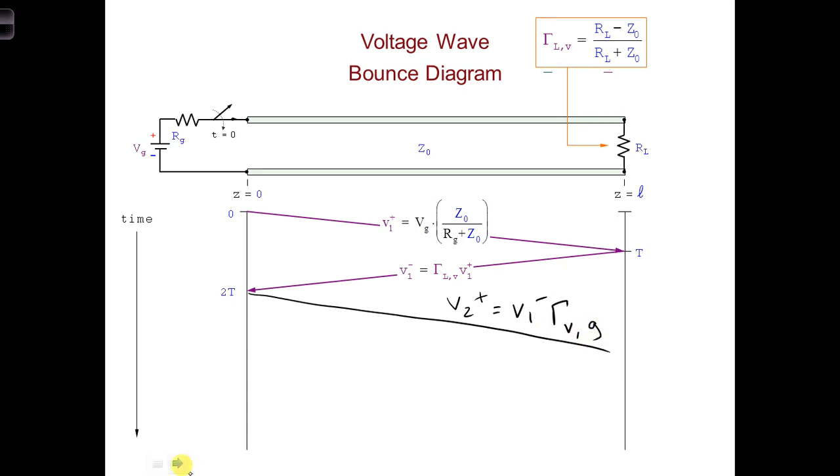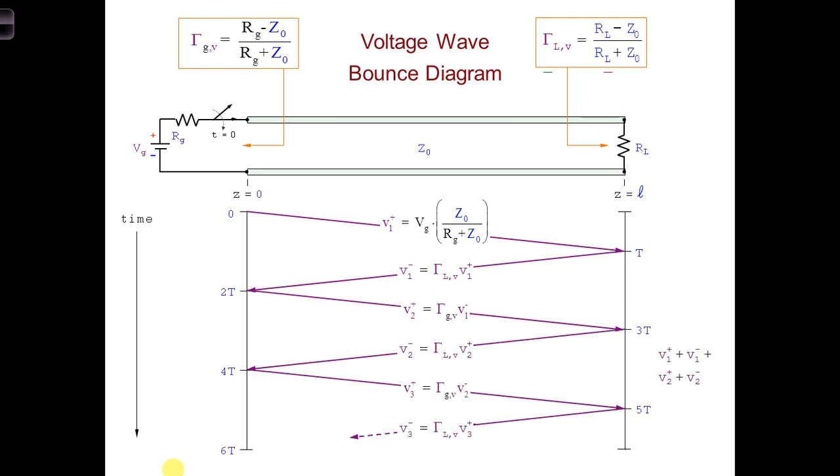And the bounce diagram continues with the generation of V2 minus and V3 plus and so forth.